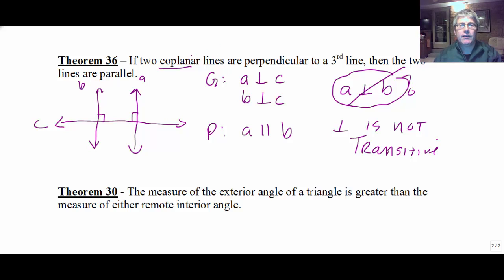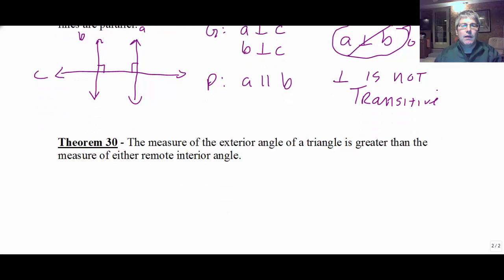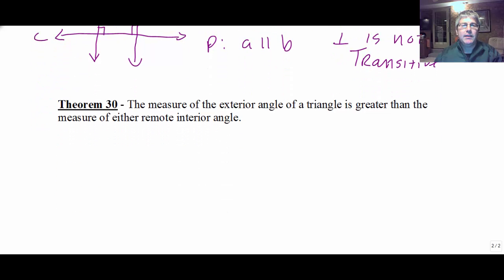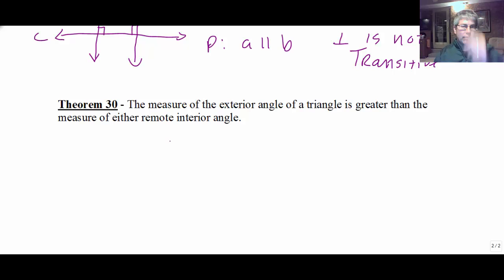There's really no shortcut for this one — just: if two coplanar lines are perpendicular to a third line, then the two lines are parallel. You'll have to commit that to memory as your reason. And finally, theorem 30: the measure of the exterior angle of a triangle is greater than the measure of either remote interior angle.